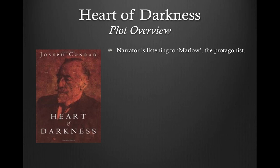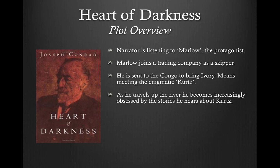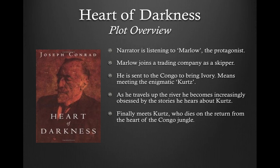Our plot overview for Heart of Darkness starts with the narrator listening to Marlow, the protagonist, talk about his story. Marlow joined a trading company as a skipper, partly through his aunt's connections, and is sent to the Congo to bring back ivory from up the river after a captain died. In doing so, Marlow travels up the river and meets the enigmatic Kurtz. As he travels, he becomes more and more obsessed with stories he hears about Kurtz. He finally meets Kurtz, who is sick and dies on the way back, and Marlow plays a part in his final affairs when he returns to Europe.